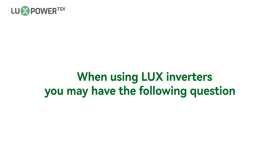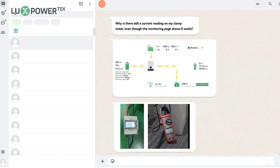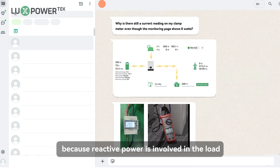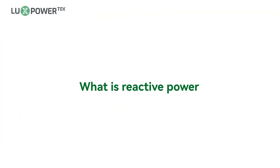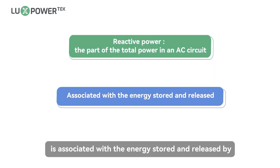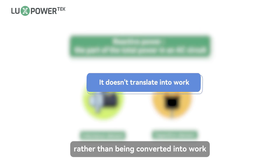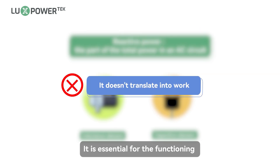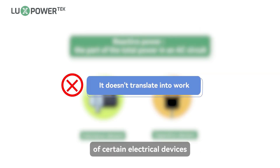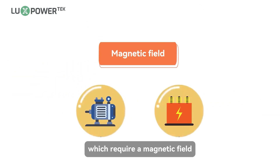When using LUX inverters, you may have the following question. This phenomenon occurs because reactive power is involved in the load. Reactive power is the part of the total power in an AC circuit that is associated with the energy stored and released by inductive or capacitive elements, rather than being converted into work. It is essential for the functioning of certain electrical devices, such as transformers and motors, which require a magnetic field.